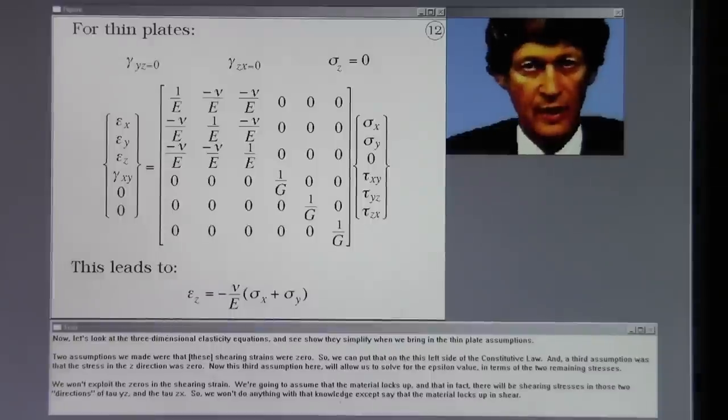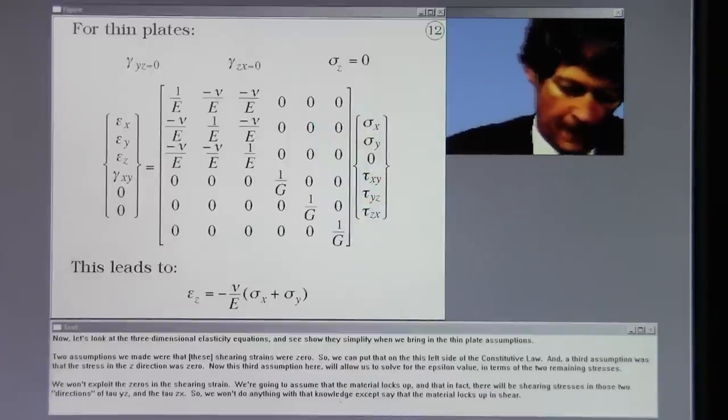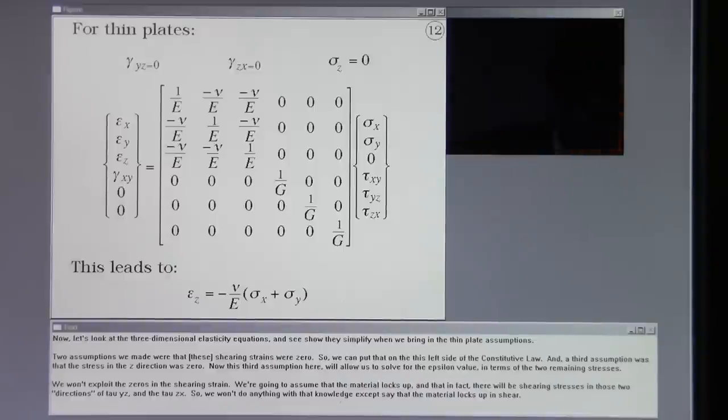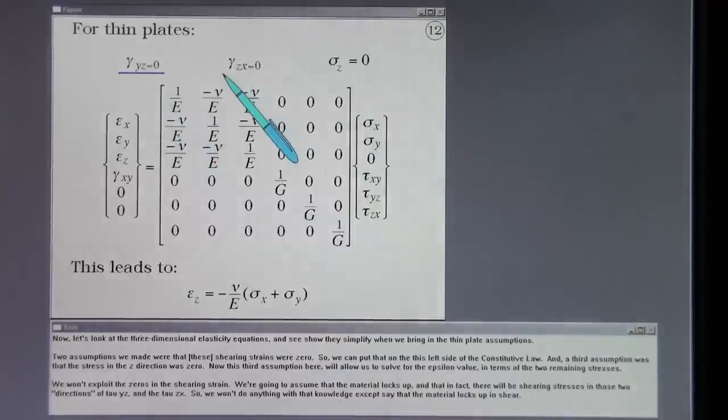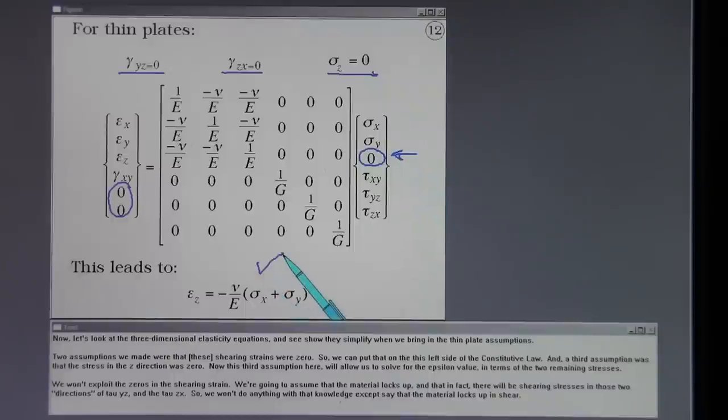Now let's look at the three dimensional elasticity equations and see how they simplify when we bring in the thin plate assumptions. Two assumptions we made were that the shearing strains were zero. So we can put that on this left side of the constitutive law. And a third assumption was that the stress in the Z direction was zero. Now this third assumption here will allow us to solve for the Epsilon Z value in terms of the two remaining stresses.